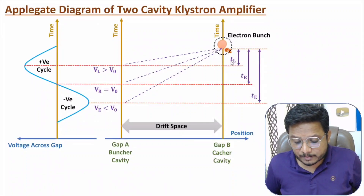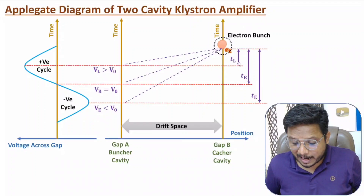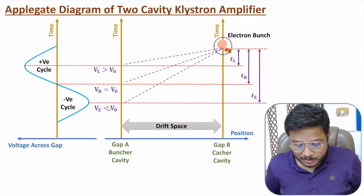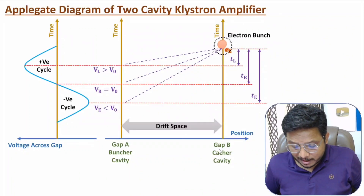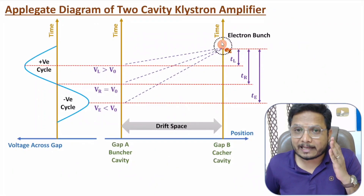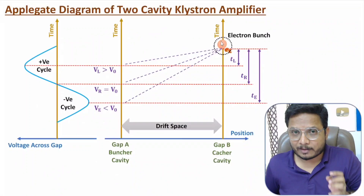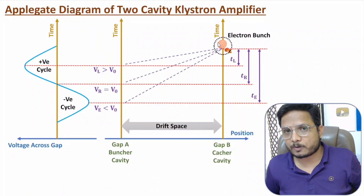In terms of delay, the late electron takes less time to travel from gap A to gap B. The reference electron's travel time is slightly higher compared to the late electron, and the early electron's travel time is the highest. Based on velocity modulation, the delay to arrive from gap A to gap B changes, generating an electron bunch. As this electron bunch is generated, the input signal is amplified, and this bunch is caught at the catcher cavity where we get the amplified output signal.